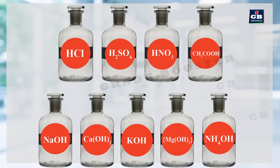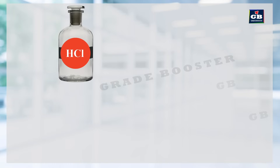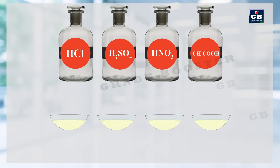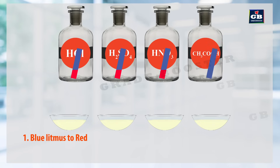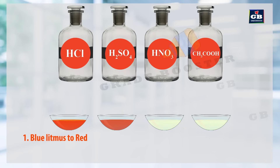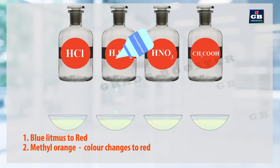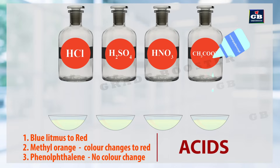Here we have some chemical compounds. Let us test these compounds with acid-base indicators. Among these compounds, HCl, H2SO4, HNO3 and CH3COOH, they turn the blue litmus to red. When methyl orange is added, they produce red color and remain colorless with phenolphthalein. This indicates that all these compounds are acids.